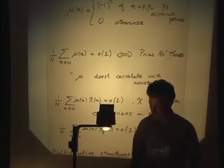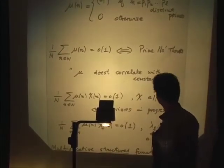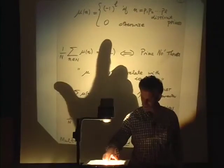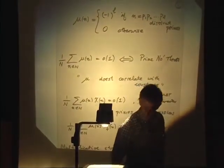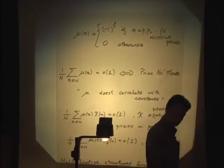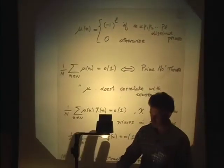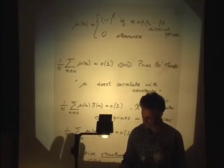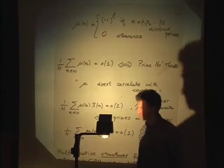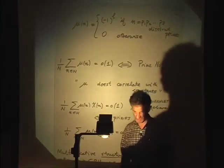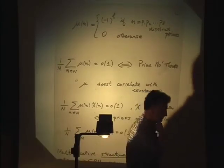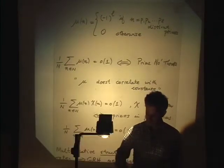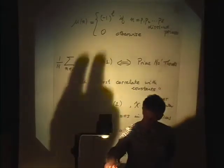What I want to discuss is the randomness issue from arithmetic — one of my favorite topics — and the following function: the Möbius function. It's the inclusion-exclusion function. At an integer n, it's simply minus 1 to the number of prime factors that n has, if n is square-free with distinct primes. If n is not square-free, then the value is 0.